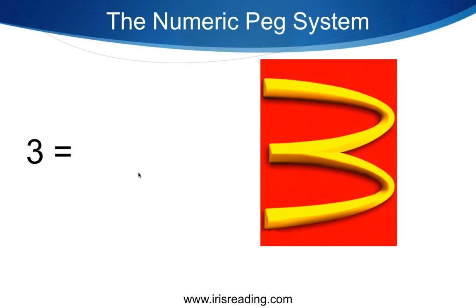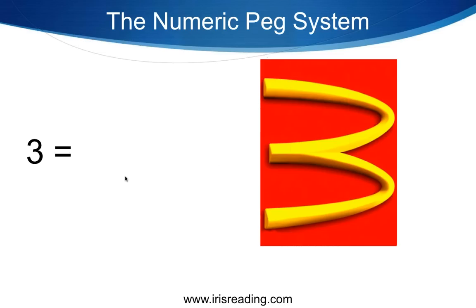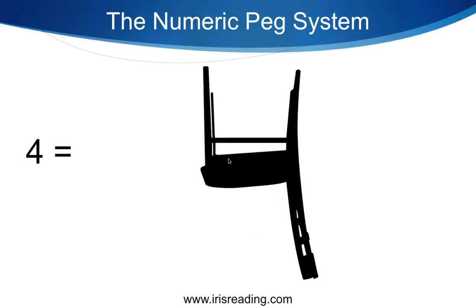Number three's visual is McDonald's, and we have to remember tomatoes. Imagine you go to McDonald's, order a Big Mac, and instead of beef patties there are really thick slices of tomatoes in it — a veggie mac. You open up your Big Mac and there are giant slices of tomatoes. Notice how the easiest way to exaggerate something is just to make it really big.